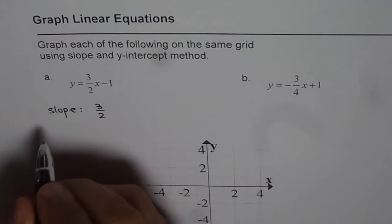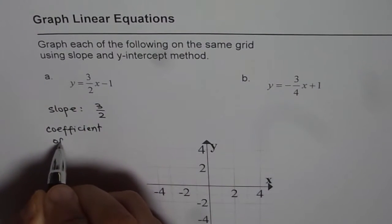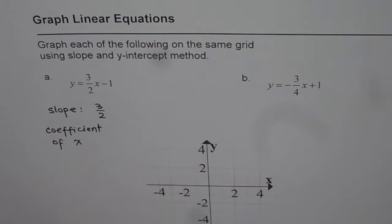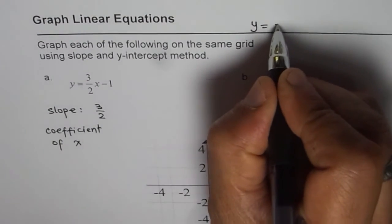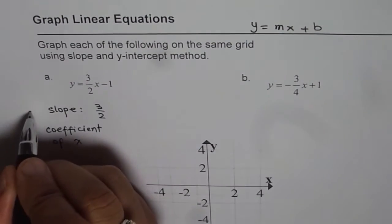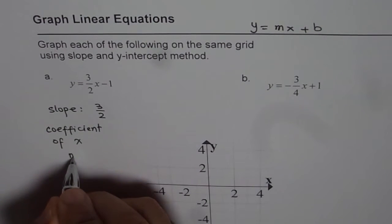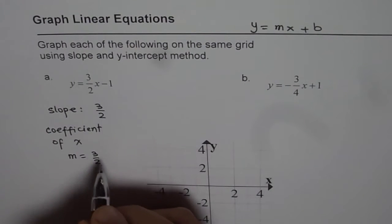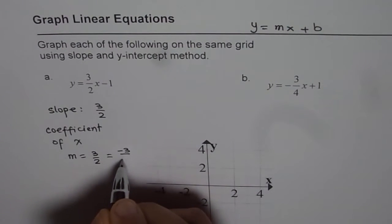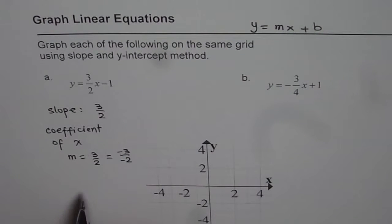As a reminder, slope is coefficient of x whenever the equation is given in the form of y equals mx plus b. Coefficient of x is m, which is our slope. Now remember one thing. When we say slope m equals 3 over 2, this is also equal to minus 3 over minus 2. That is important to understand. You will soon realize how.